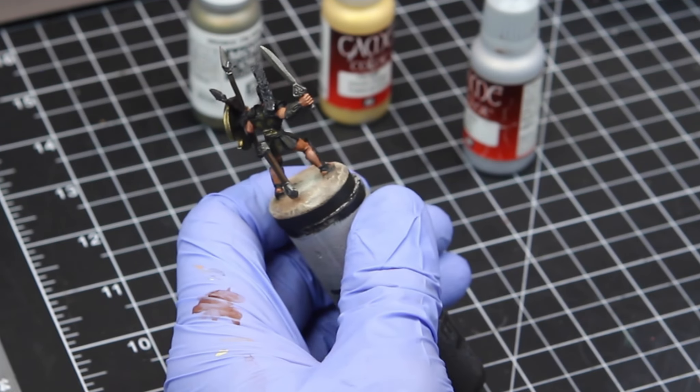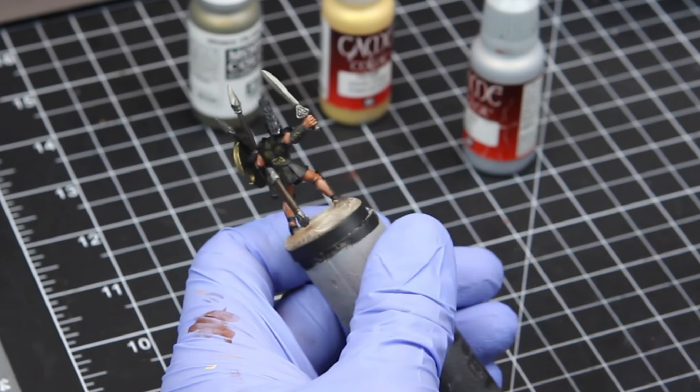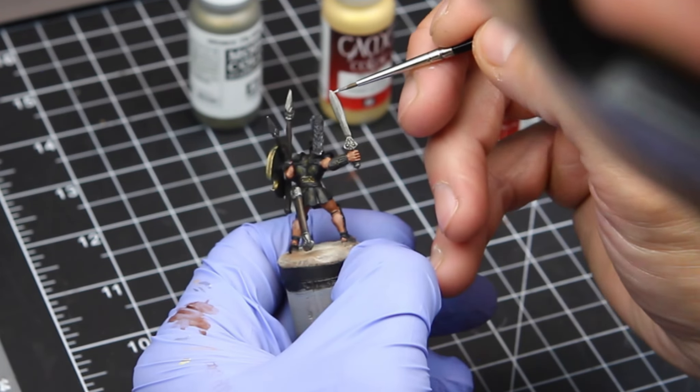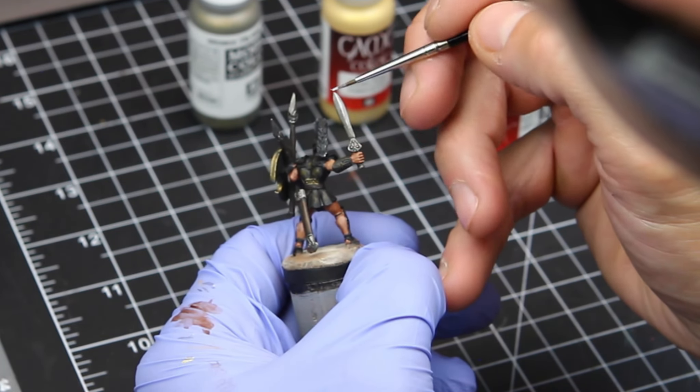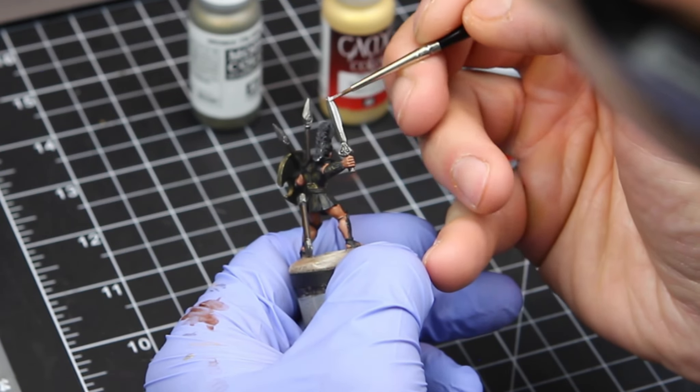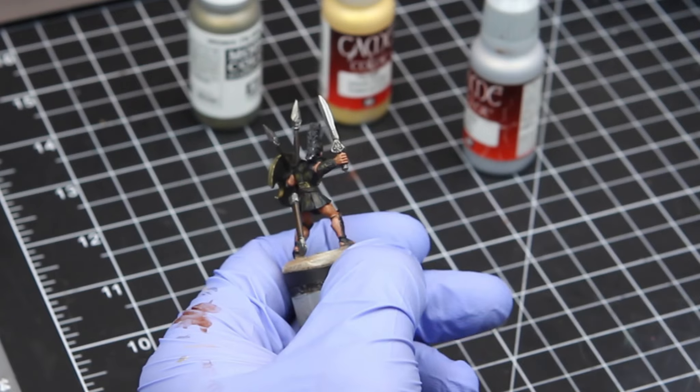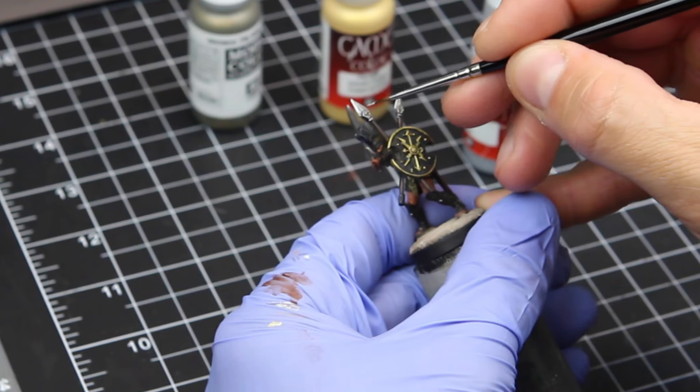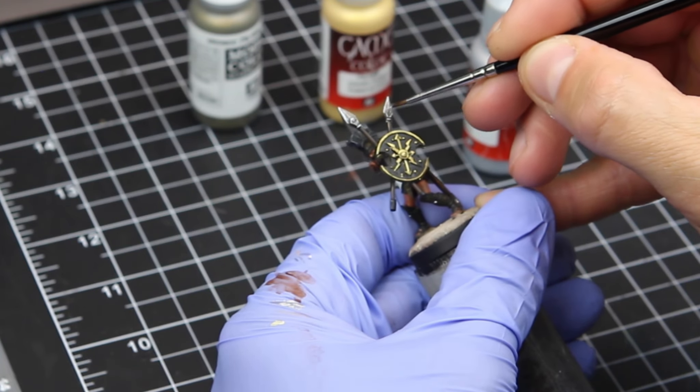And after I had base coated all the metal on here, I did give it all a wash with Nuln Oil. And now I'm highlighting it with the silver. And for all of my bronze pieces in this miniature, the highlight, it was also washed in Nuln Oil. And then the highlight was that gold that you see there in the background.